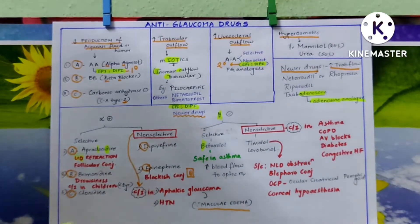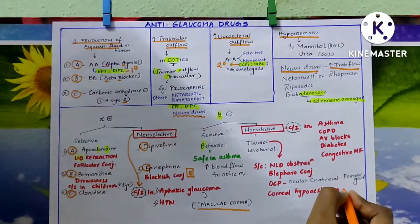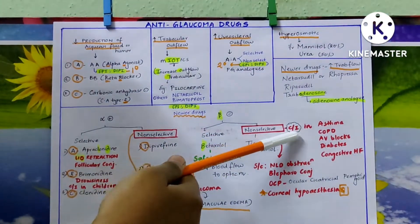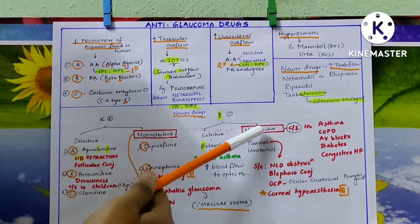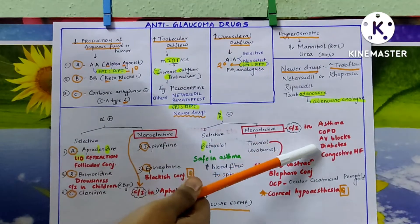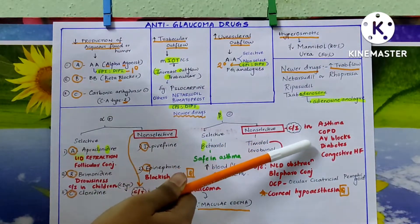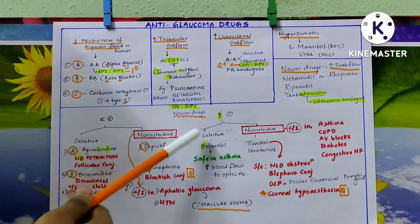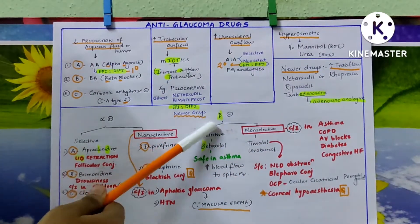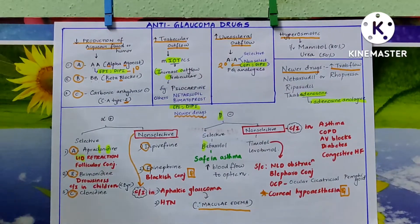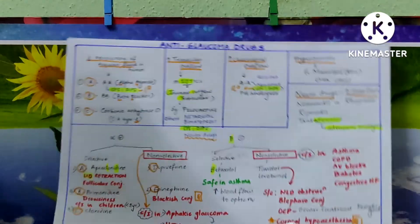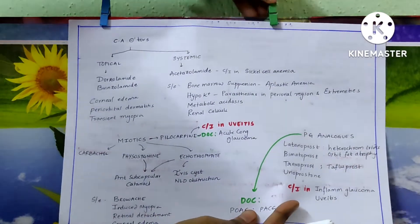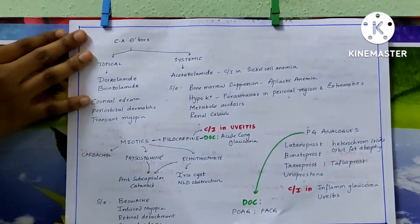Specific side effects of timolol include NLD obstruction, blepharoconjunctivitis, ocular cicatricial pemphigoid, and corneal hypoesthesia. Corneal hypoesthesia has been asked several times in exams — very important. The whole class of non-selective beta blockers is contraindicated in asthma, COPD, AV blocks, diabetes, and congestive heart failure. Remember all five conditions.